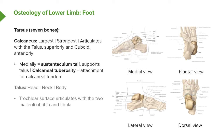The talus sits superior to the calcaneus and has a head, neck, and body. The neck is visible on the lateral view, and on the medial view, most anteriorly is the head, then the neck, and posteriorly the body, which attaches to the calcaneus in line with the sustentaculum tali. The trochlear surface of the talus allows for articulation with the two malleoli from the tibia and fibula, and its wedge shape strengthens the ankle joint during various movements.